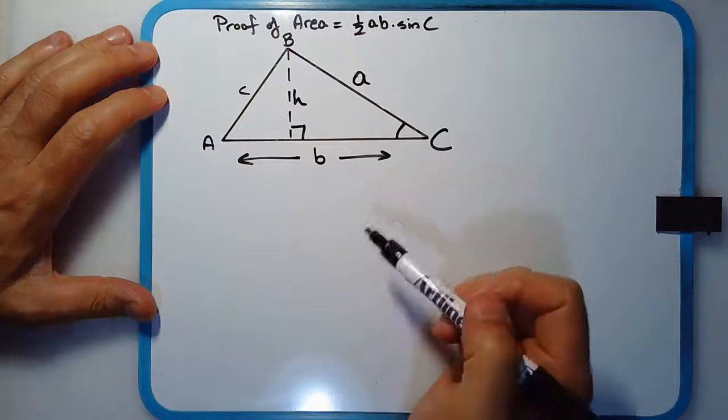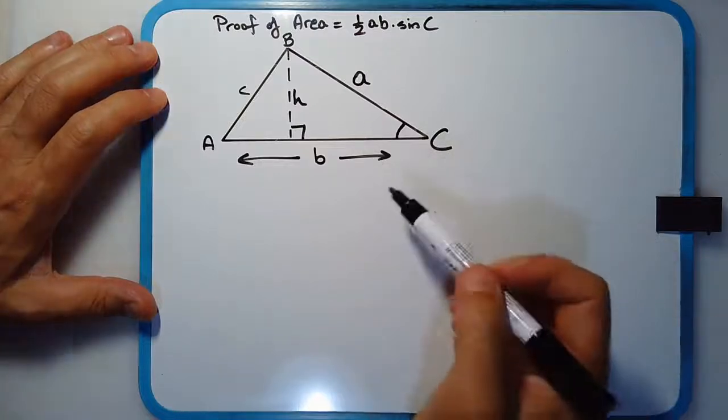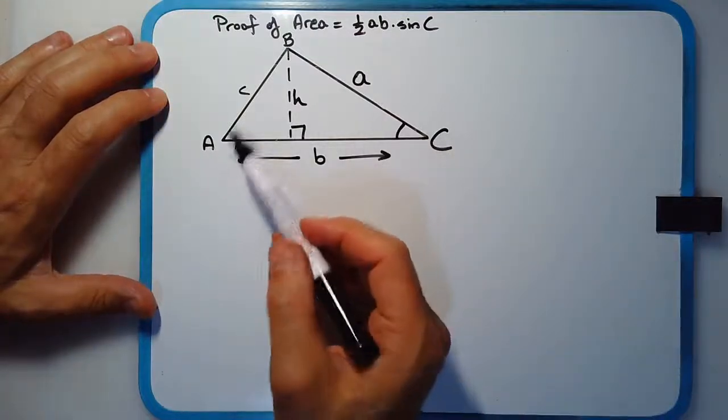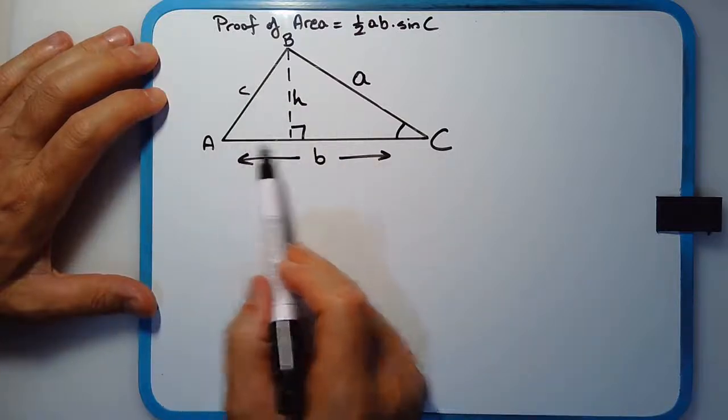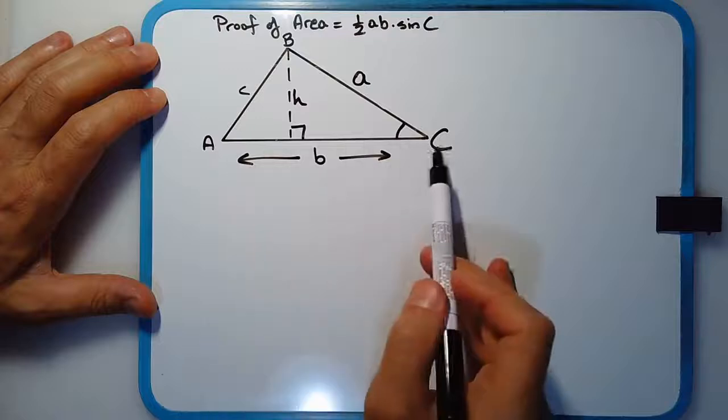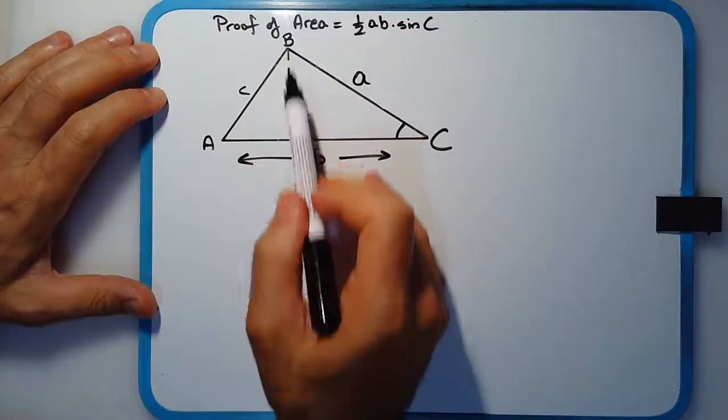So the following is just a random triangle, no particular type of triangle, triangle ABC. And just note that we've got the base here of B, and we've got the perpendicular height here H.